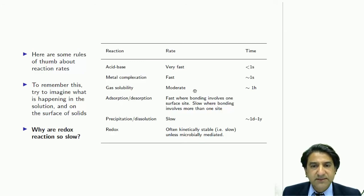Gas solubility—carbon dioxide or oxygen dissolving into water, these kinds of processes—they're moderately slow, about one hour, because they're interfacial processes. The gas can only dissolve at the interface between the liquid and solid, whereas acid-base and metal complexation are homogeneous reactions that can take place throughout the whole solution.